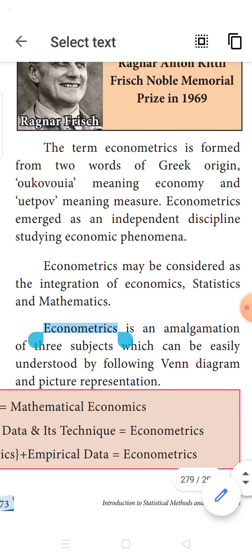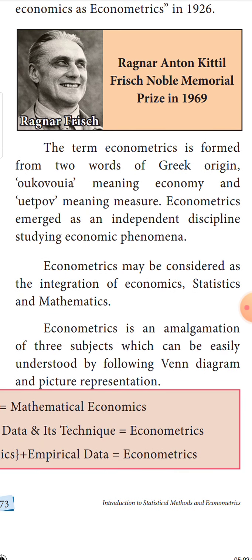The term econometrics was formed from two Greek words: 'oikonomia' which means economy, and 'metron' which means measure. In the latter years, econometrics emerged as a separate subject with independent discipline, and people took econometrics as an independent discipline for their studies regarding economics and mathematics.